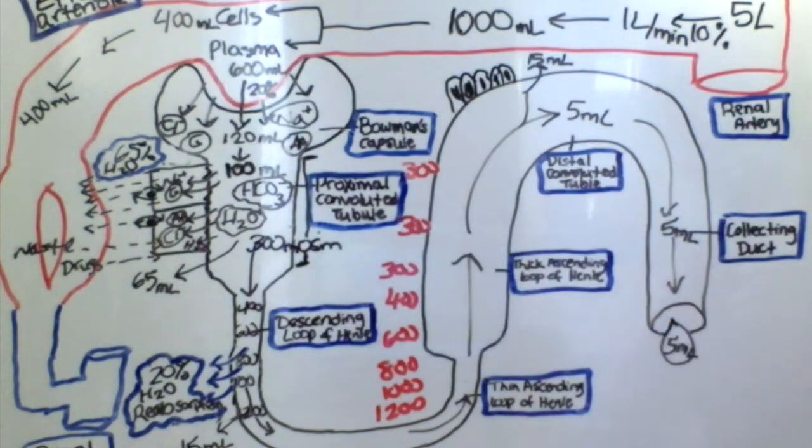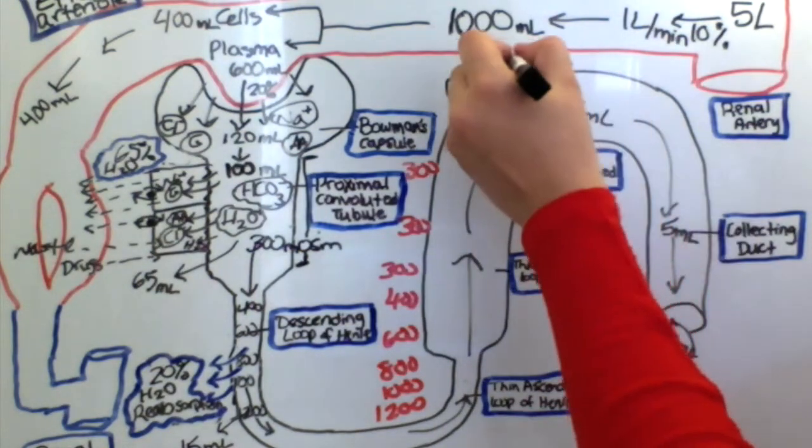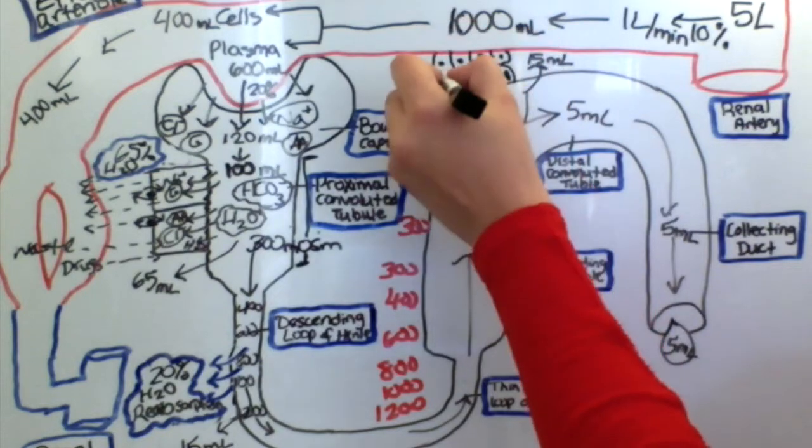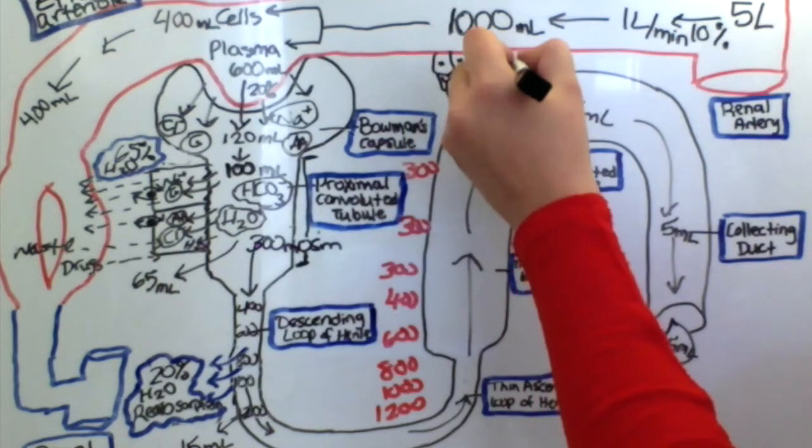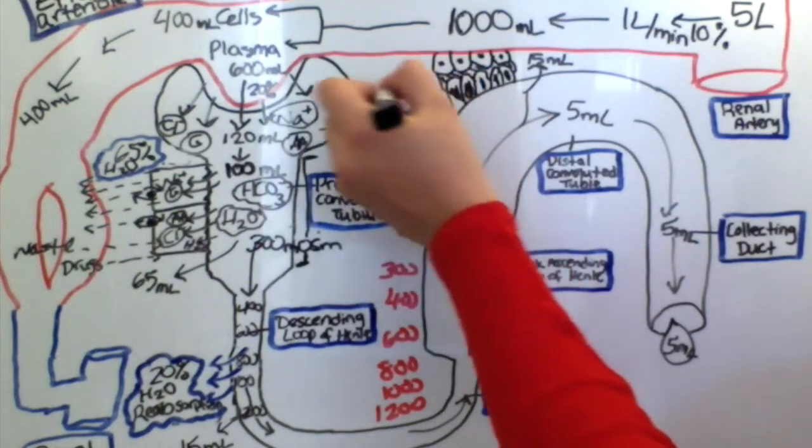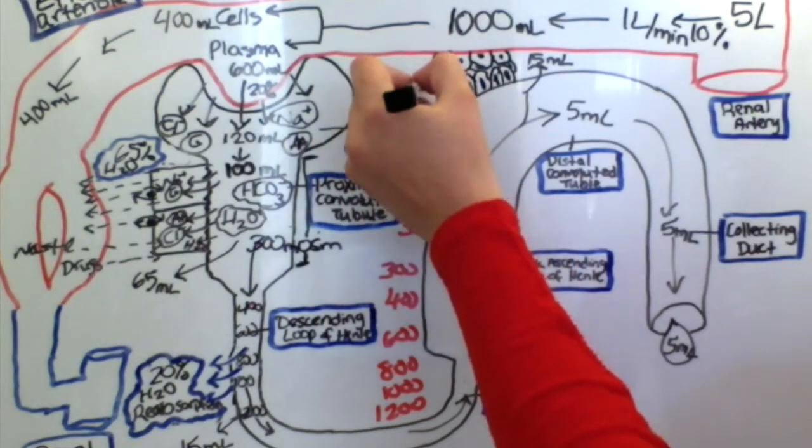On the distal convoluted tubule, we have cells called macula densa and these have mechanoreceptors which detect changes in blood pressure. The macula densa cells work together with juxtaglomerular cells and detect changes in blood pressure and release the hormone called renin.